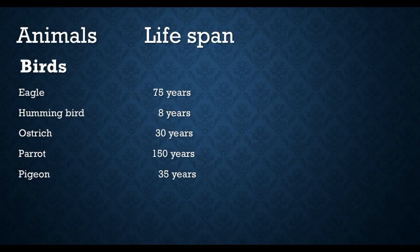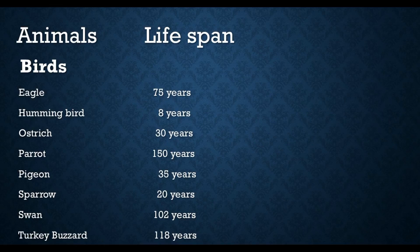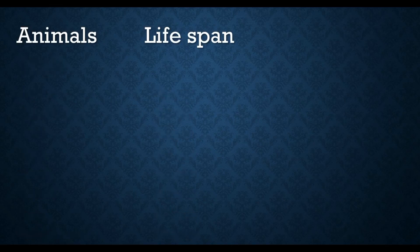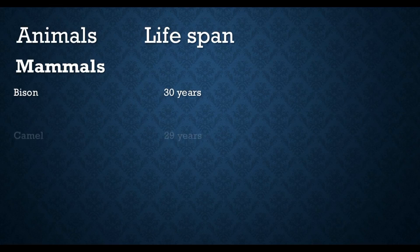Pigeon lifespan is 35 years, sparrow lifespan is 20 years, swan lifespan is 102 years, and turkey buzzard lifespan is 118 years. Next are mammals: bison lifespan is 30 years.